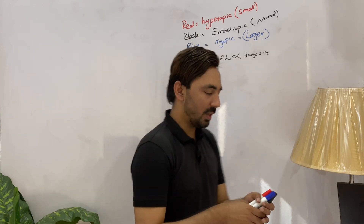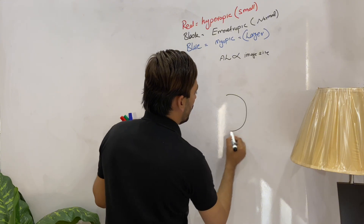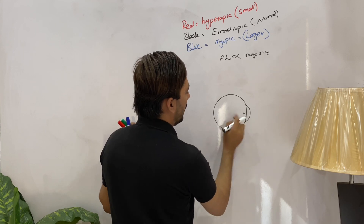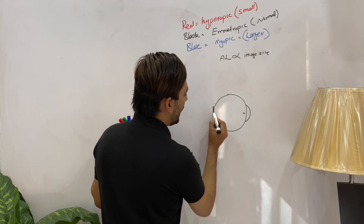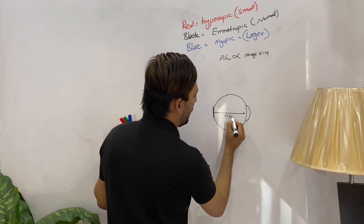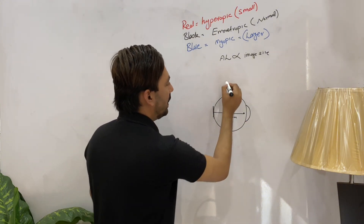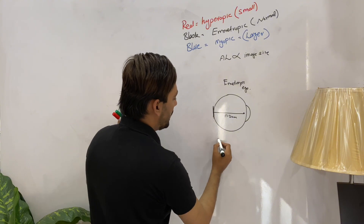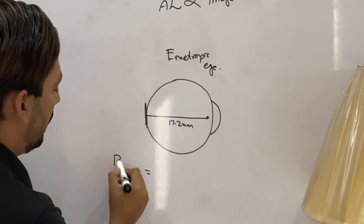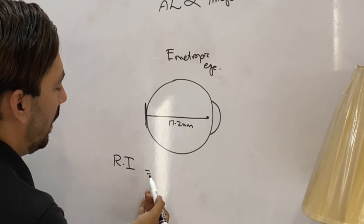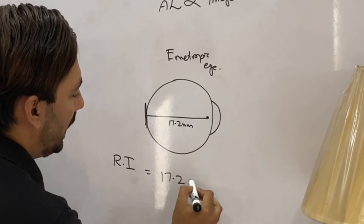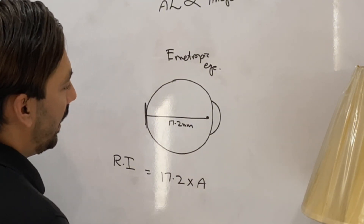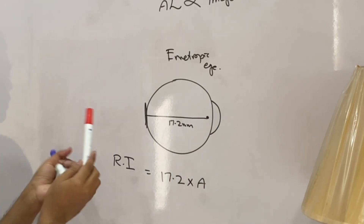With a simple formula we can calculate the retinal image size for an emetropic, hyperopic, or myopic eye. For a normal emetropic eye, this is the nodal point and this is the retina. The distance between the nodal point and the retina is 17.2 mm. To find the retinal image size in the emetropic eye, we simply multiply this 17.2 mm by the angle A.